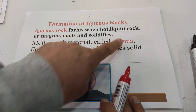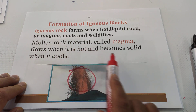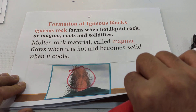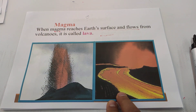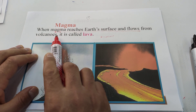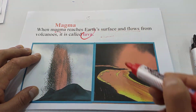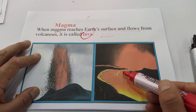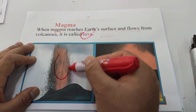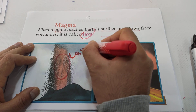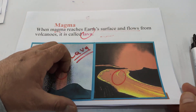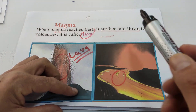Molten rock material is called magma. It flows when it is hot and becomes solid when it cools — we call that process igneous rock formation. When magma reaches the Earth's surface and flows from a volcano, it is called lava. So what comes out of a volcano eruption we call lava.